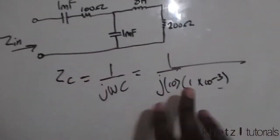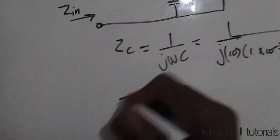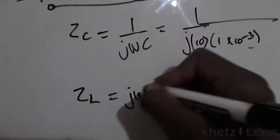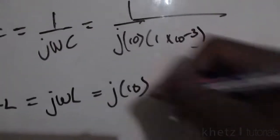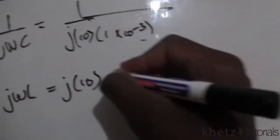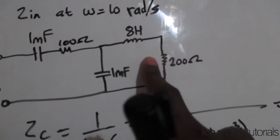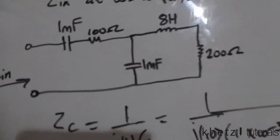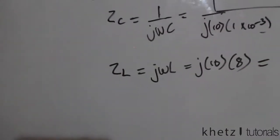Punch that into your calculator to get Zc. For the inductor, to transform it into its equivalent impedance you use ZL = jωL. Omega is given as 10 and the inductance is 8 henrys. The resistances are already in ohms and qualify as impedances themselves.